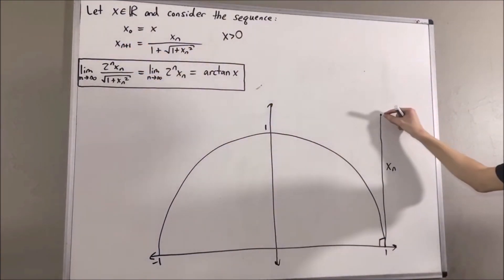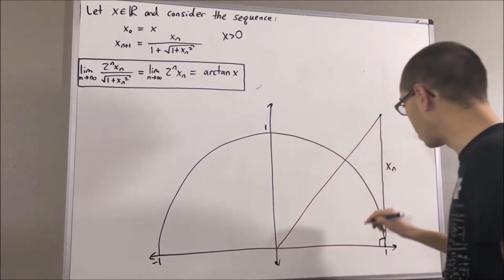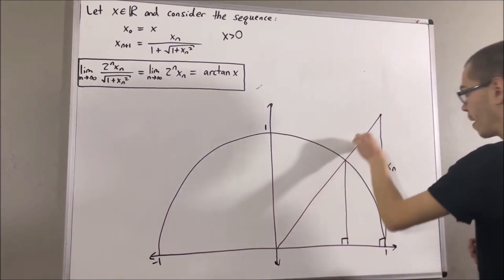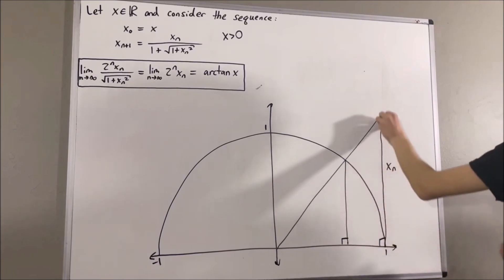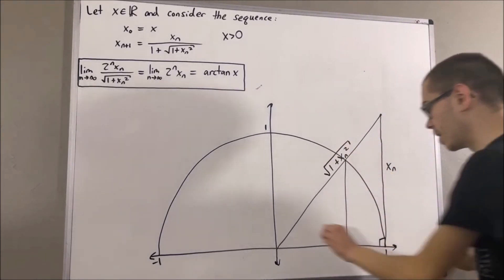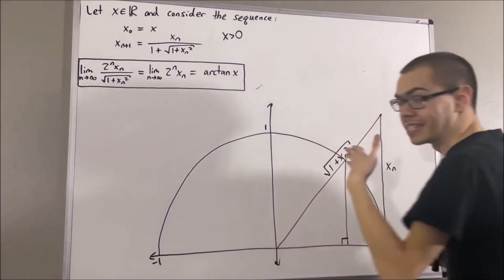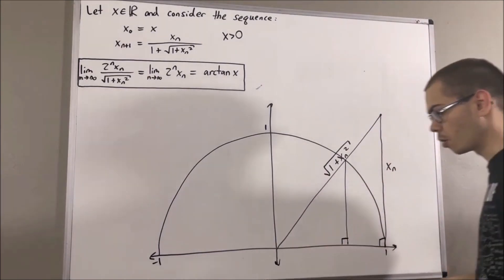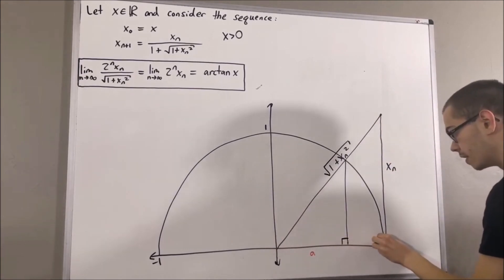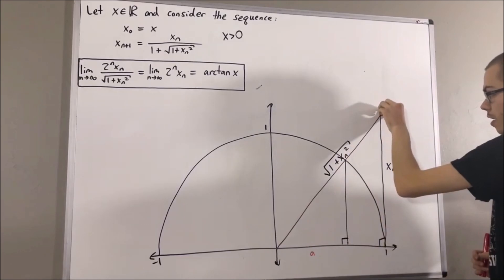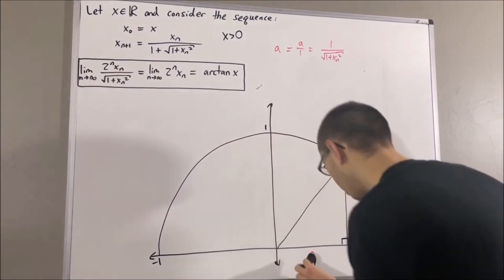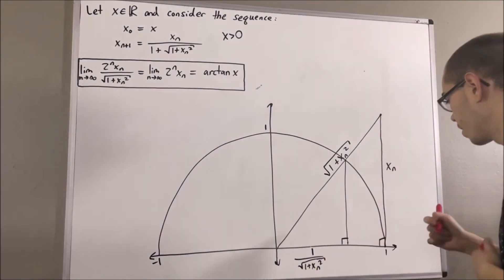Now that we have a segment of length xₙ, we want to find a line segment in this diagram that has length xₙ₊₁. To do that, let's draw a line segment from this point to the center of the circle and drop a perpendicular from this point. Applying the Pythagorean theorem on this right triangle, the length of the hypotenuse is equal to the square root of 1 plus xₙ squared. Noting that these two right triangles are similar and their side lengths are proportional, if we label this side length a, we get a over 1 equals 1 over the square root of 1 plus xₙ squared, so a equals 1 over the square root of 1 plus xₙ squared.